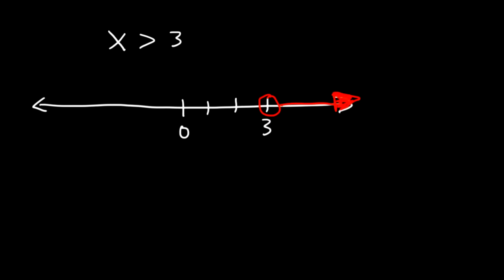Now in interval notation, here's how you can represent the same answer. All the way to the right, you have positive infinity, and negative infinity is all the way to the left. So it's from 3 to infinity.